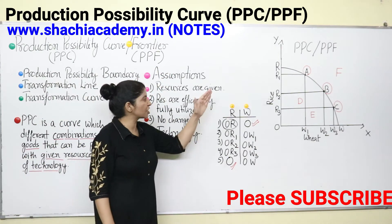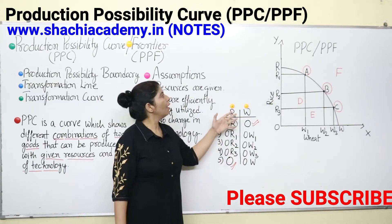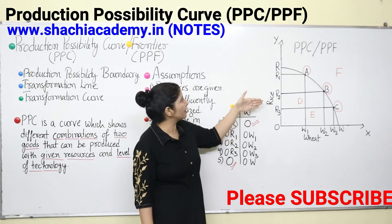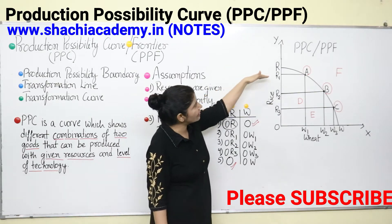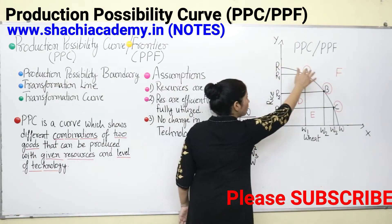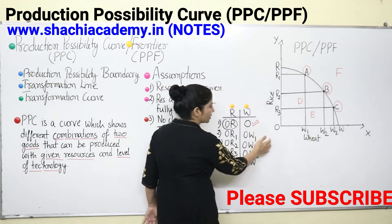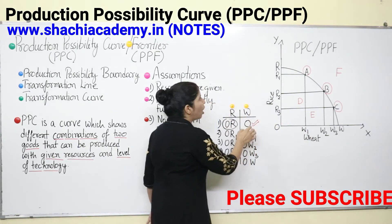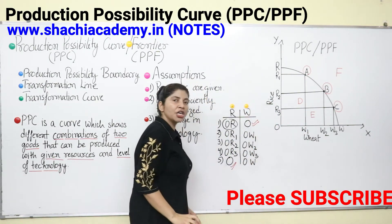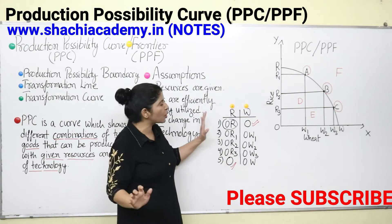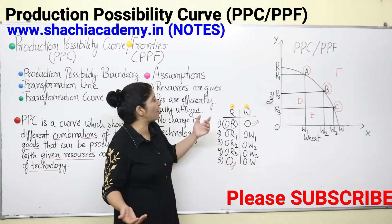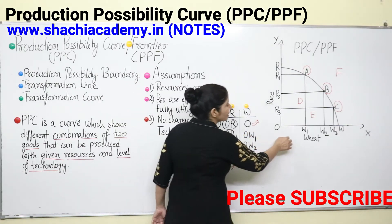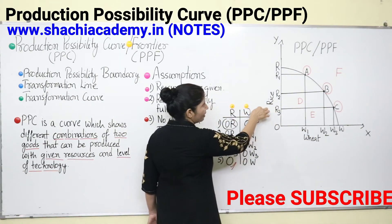We can now discuss it with the help of a Production Possibility Schedule — this is the schedule, and then there is the curve as its graphical representation. We can see here a curve with two axes. On the x-axis, we have taken wheat. On the y-axis, we have taken rice. You can take any other commodity also — there is no compulsion for using wheat or rice; you can take oranges, apples, anything you like.